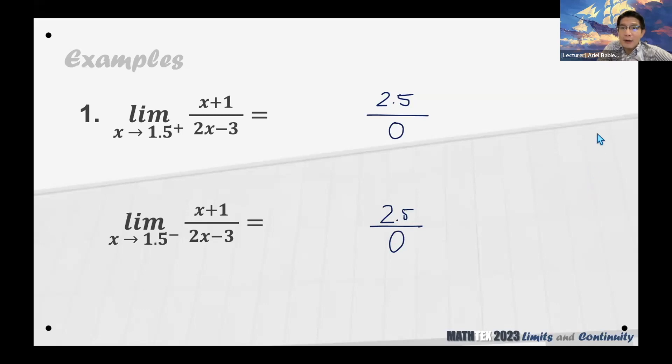So immediately these are indicators that we are going to get infinities as limits. But then the question is positive or negative infinity? Sorry for the dog. Okay, so let's start with the first one, we are just choosing positive or negative.